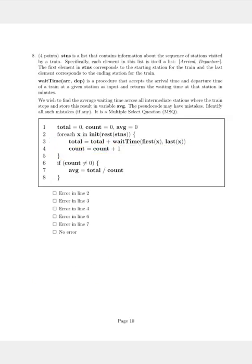So once we exit the loop, we see that if count is not equal to zero, that means if the train has stopped in at least one station, we take the average, which is the total wait time divided by the number of stations the train has stopped at.